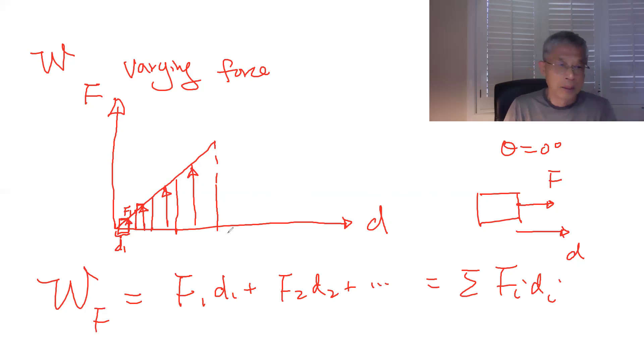So that will be summation of Fi times Di. But what's that? That's essentially equal to the area here of this triangle. Okay. So then that will be equal to the triangle's area, right? In the F versus D graph.